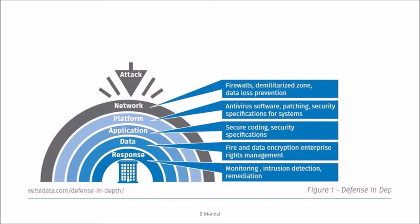The database server software has its own secure coding to prevent malicious operations. After that comes the data layer involving data encryption and enterprise rights management. Finally there is the response layer, which involves monitoring, intrusion detection, and remediation. Only if an attacker passes all these layers will they successfully intrude into your system.